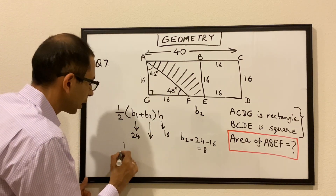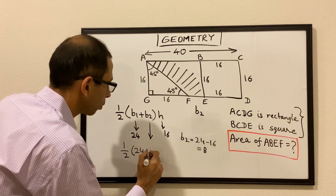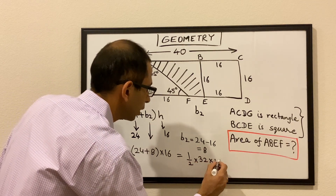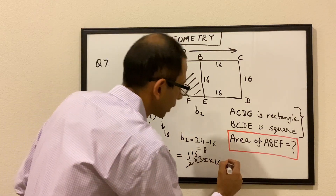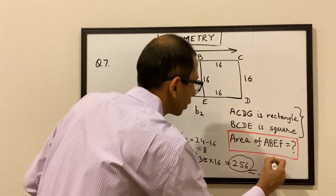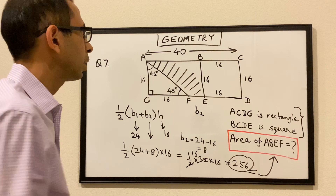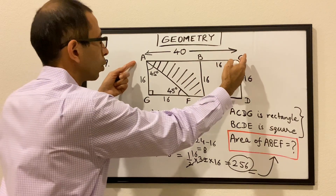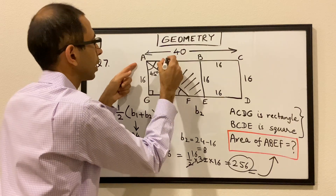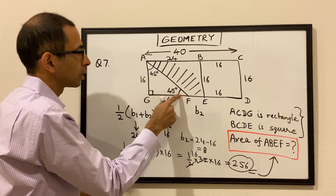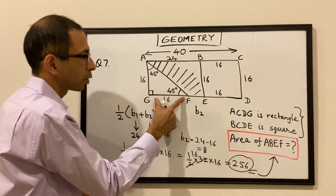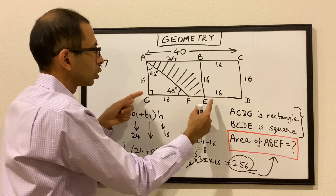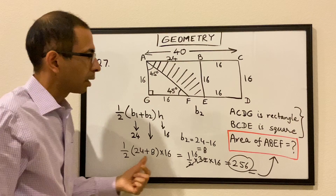So B2 is GE, which is 24 minus 16, which is 8. We now have all the values: the area of the trapezoid is half times (24 plus 8) times 16, which is half times 32 times 16. Half of 32 is 16, so 16 times 16 is 256. So the area of the trapezoid is 256. To reiterate: since BCDE is a square, each side is 16 and the height is 16; the overall length is 40, so AB is 24; the 45-45 triangle gives GF as 16, so B2 is 8; and the area is 256.